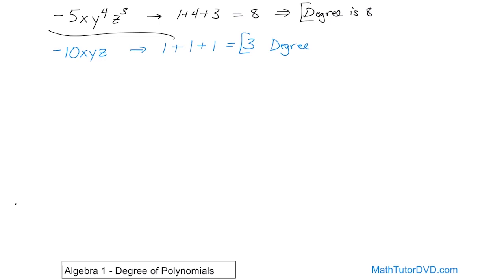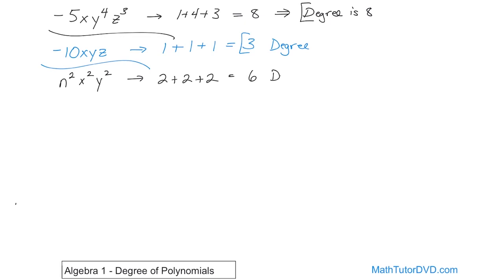So the degree is 3 — that's what you would circle. Similarly, if you had n squared times x squared times y squared, to find the degree you just add up the exponents because it's just one term. These are all monomials so far. So 2 plus 2 plus 2 gives you 6, and that's the degree. It's a 6th degree monomial.